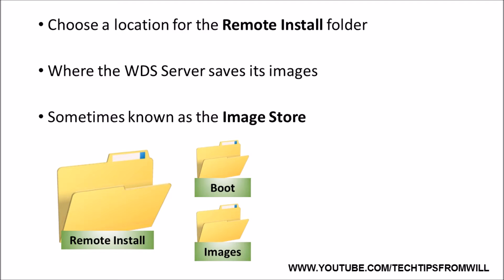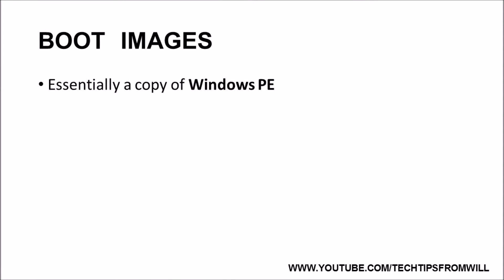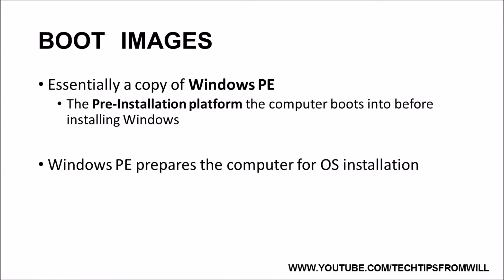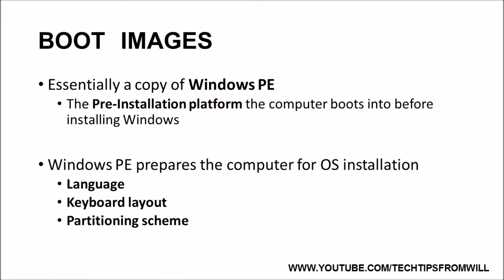When boot and install images are added to the WDS server, the important files for those images are saved to the image store. A boot image is essentially a copy of Windows PE. Windows PE is the pre-installation platform that a computer boots into before installing Windows. Whilst in Windows PE, you can prepare the computer for installation by selecting the desired language, keyboard layout, and partitioning scheme. If you have ever installed a copy of Windows, you should be familiar with these options, and thus be familiar with Windows PE.